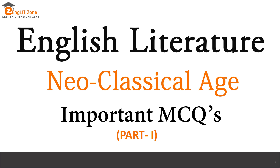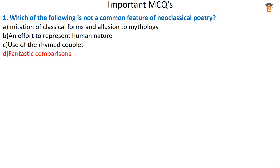Question number one: which of the following is not a common feature of neoclassical poetry? The correct answer is option D — fantastic comparisons is not a common feature of neoclassical or 18th century poetry. The other three options are correct features: imitation of classical forms, efforts to represent human nature, and use of the rhymed couplet.